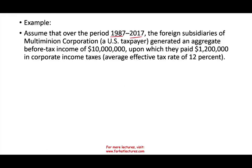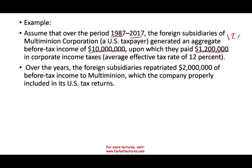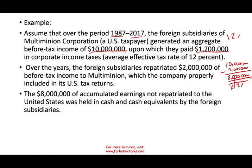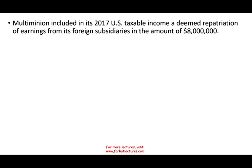Assume that from 1987 to 2017, foreign subsidiaries of a multi-million corporation — a U.S. taxpayer — generated an aggregate before-tax income of $10 million, upon which they paid $1.2 million in foreign taxes, which is a 12% effective rate. Over the years, the foreign subsidiary repatriated $2 million back to the U.S. and paid taxes on it. What's left is $8 million overseas. On that $8 million, they already paid 12% to the foreign country. The $8 million of accumulated earnings was held in cash and cash equivalents by the foreign subsidiary. So in 2017, that $8 million is deemed to be repatriated and must be included in their income.